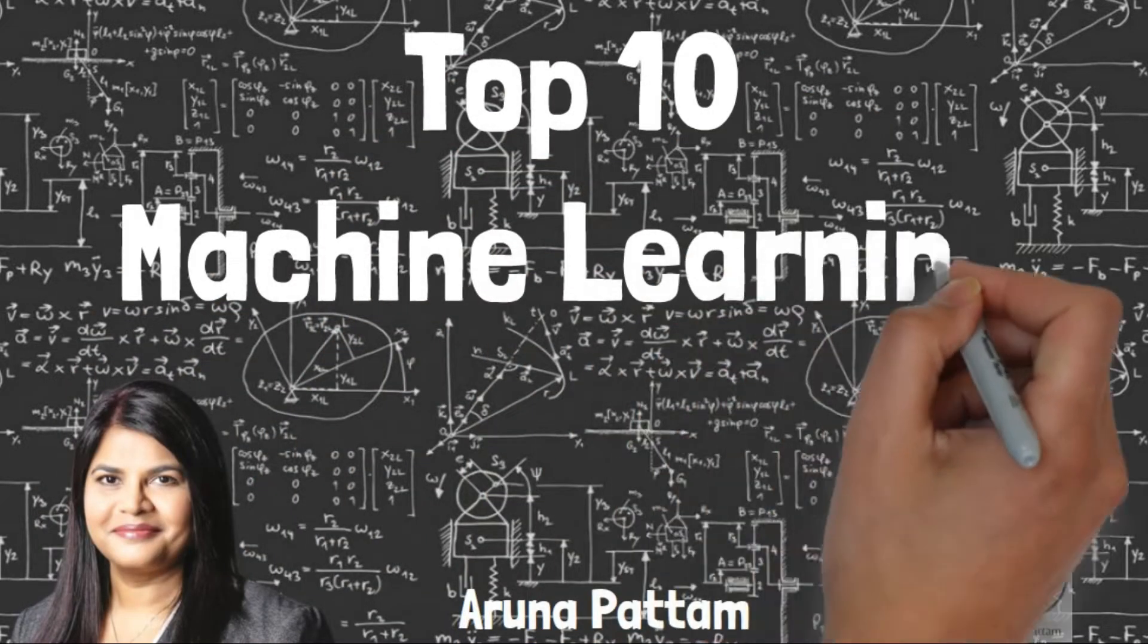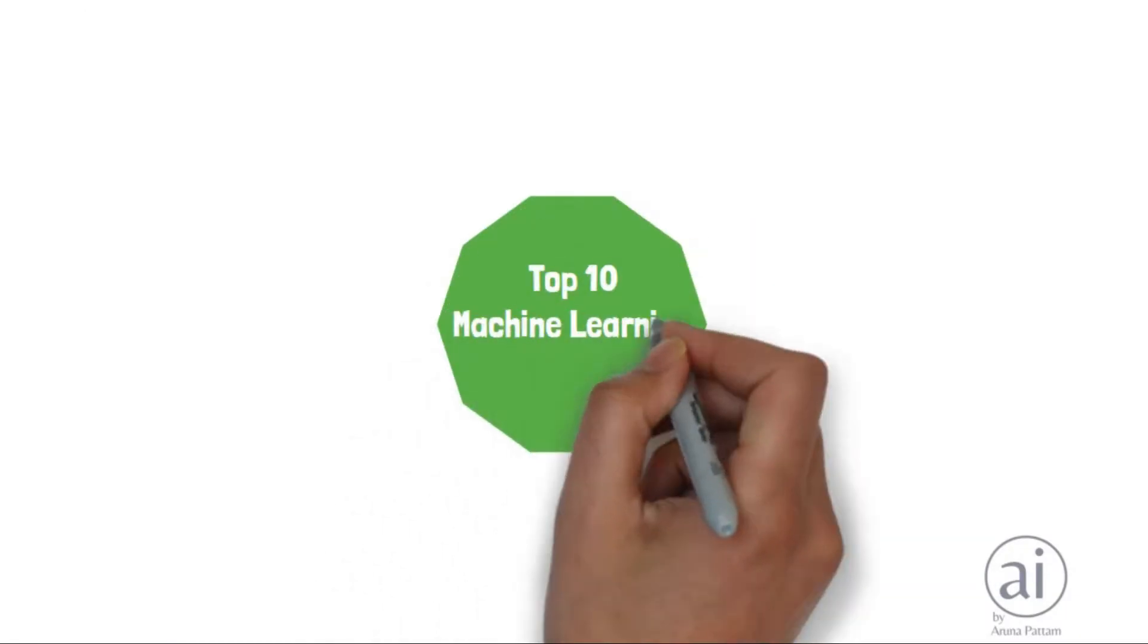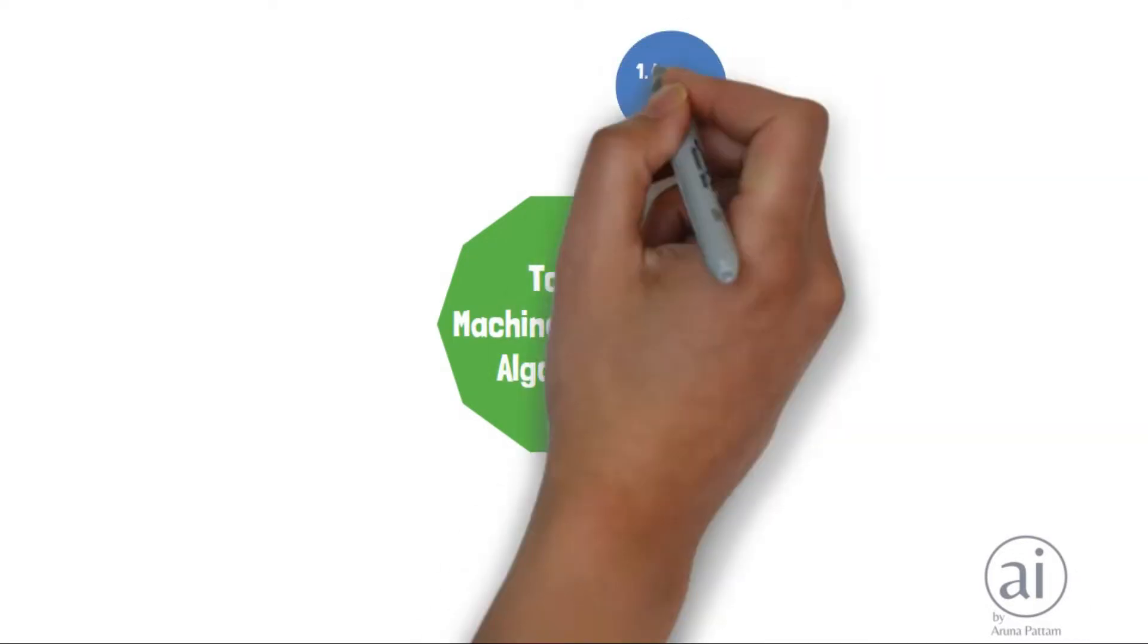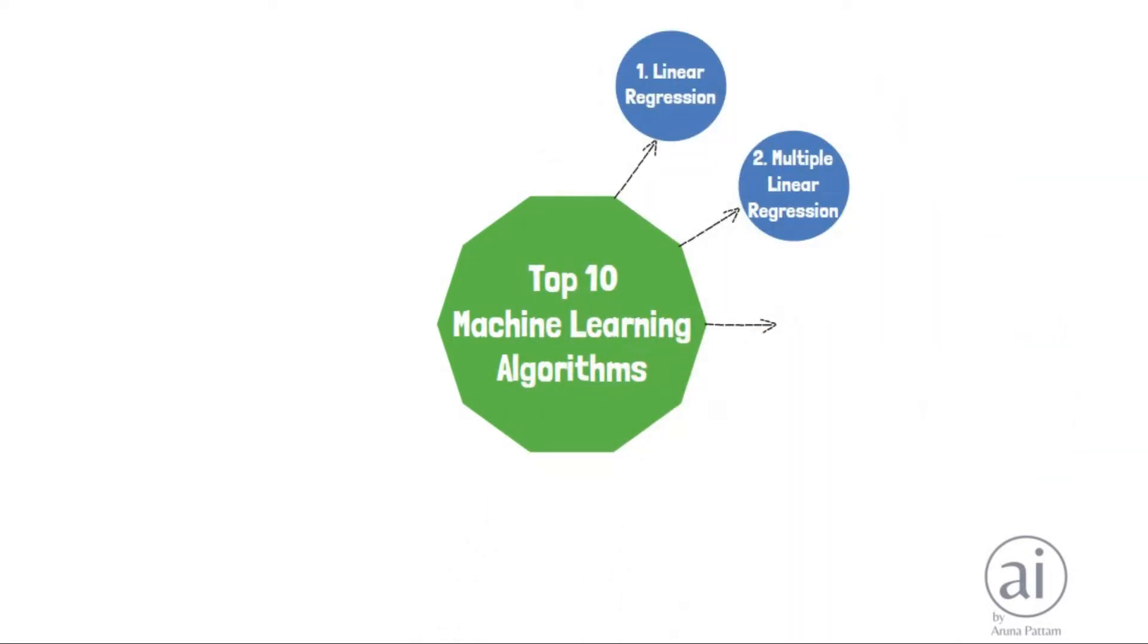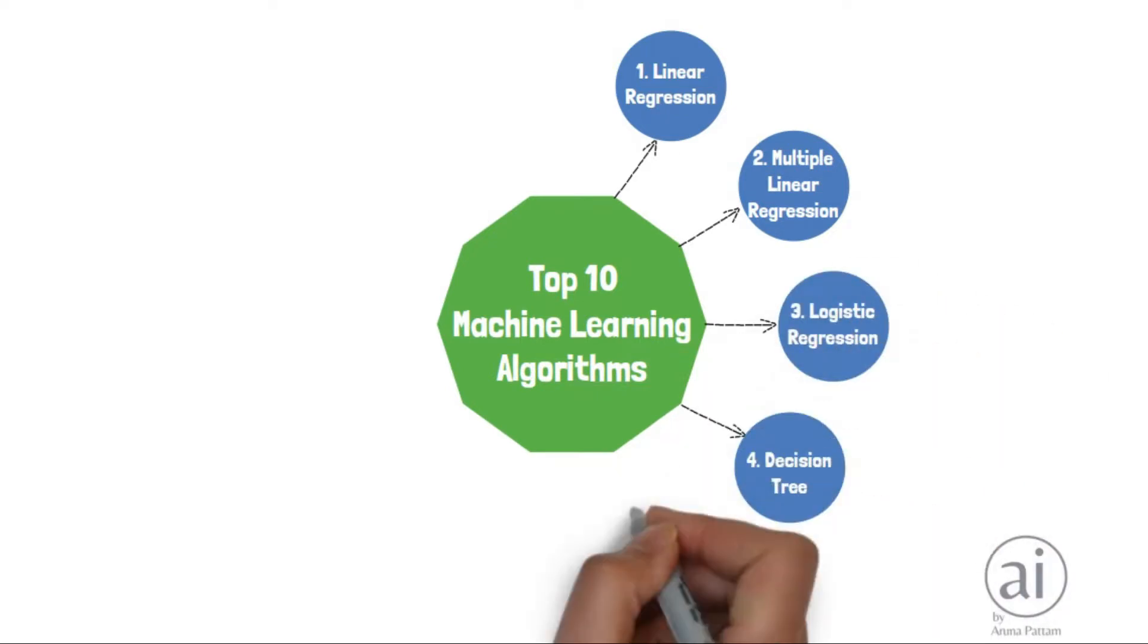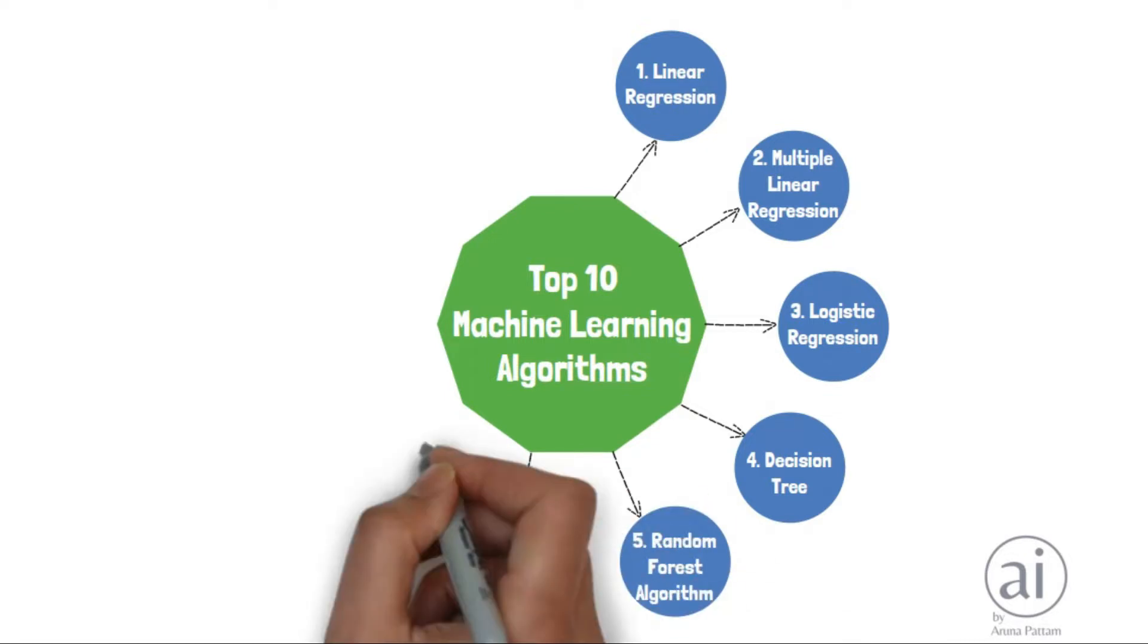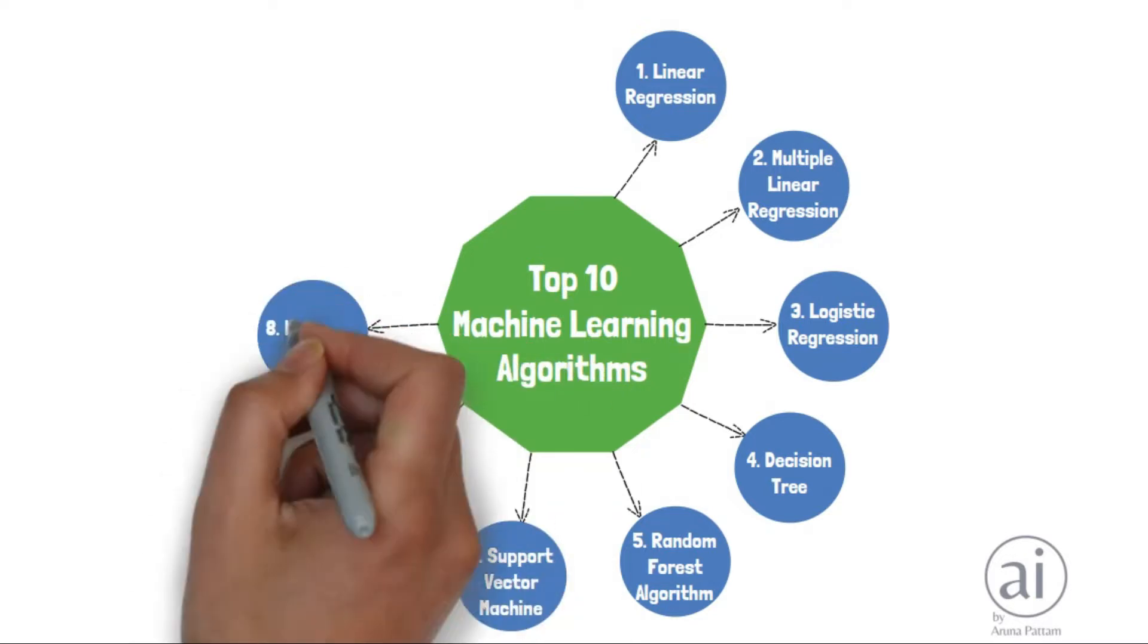The top 10 machine learning algorithms are: linear regression, multiple linear regression, logistic regression, decision tree, random forest algorithm, support vector machine, k-nearest neighbors, k-means clustering, hierarchical clustering, and neural networks.